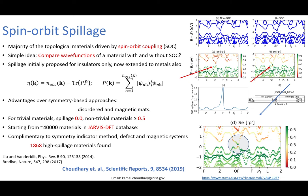Using this idea, applying this for 3D materials, we had found 1800 high spillage materials and one of them was bismuth selenide. On the right-hand side I show an example for bismuth selenide. You can see on the left-hand side is a non-spin-orbit band structure and right-hand side is a spin-orbit band structure.